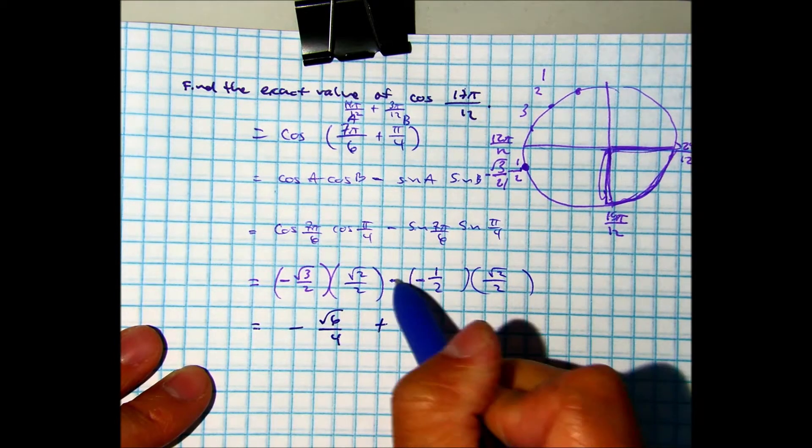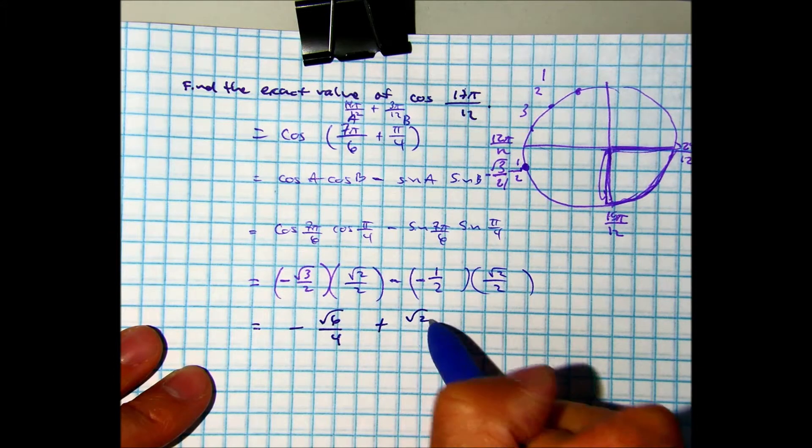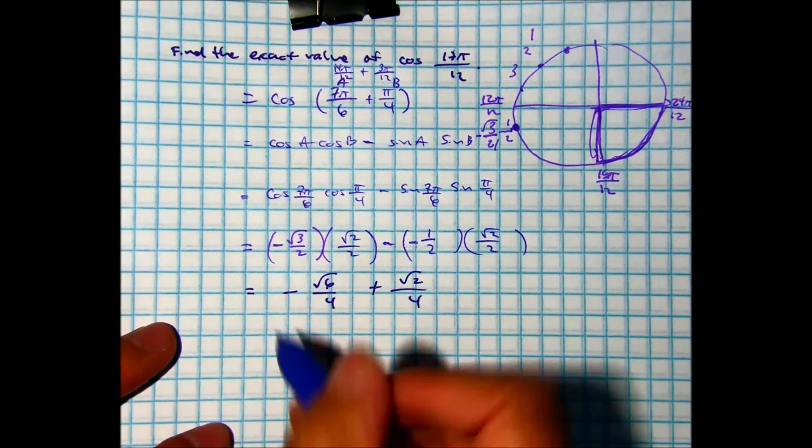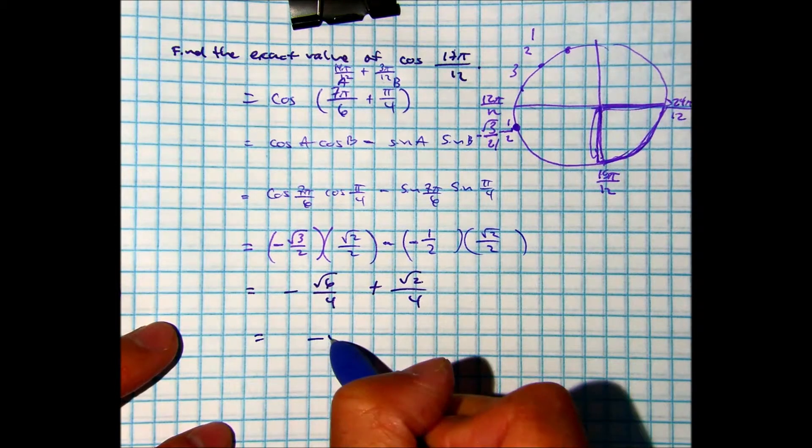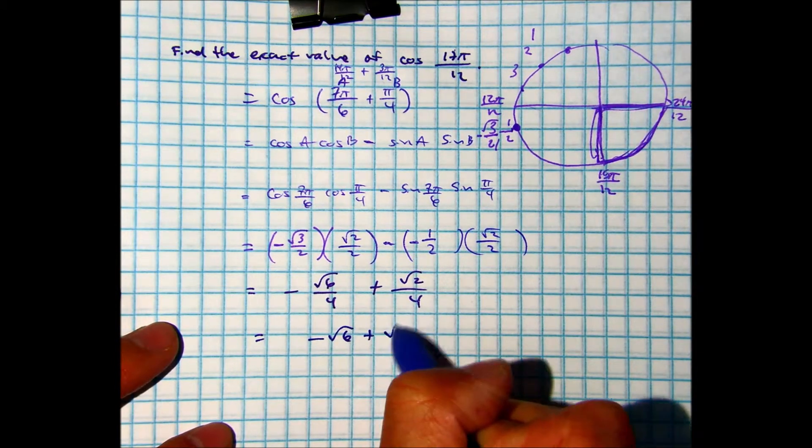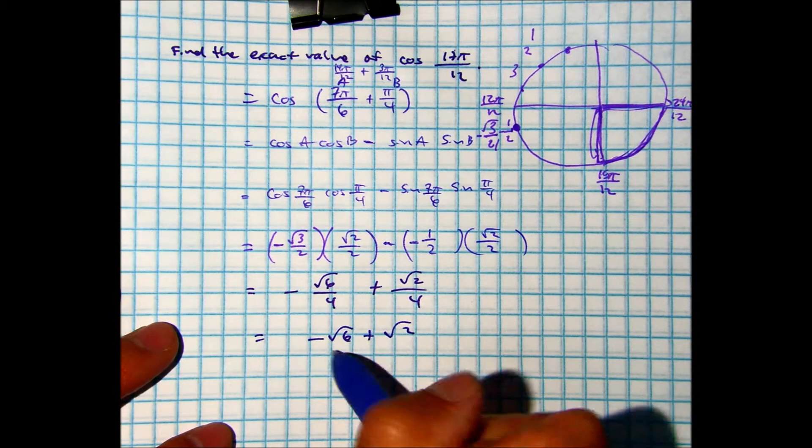Plus, right? See the plus? Radical 2 over 4. And then, these are not like terms, so you can just do negative 6 plus radical 2 over 4.